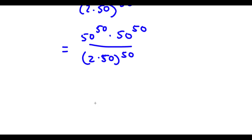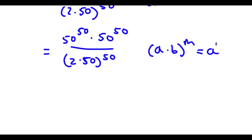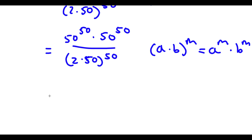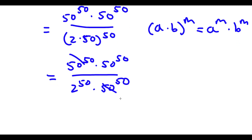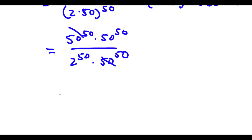So now if I have something in the form a times b to the power of m, this is equal to a to the power of m times b to the power of m. So 2 times 50 to the power of 50 is going to equal 2 to the power of 50 times 50 to the power of 50. Now these two 50 to the power of 50's can cancel out, so now I'm left with 50 to the power of 50 over 2 to the power of 50.